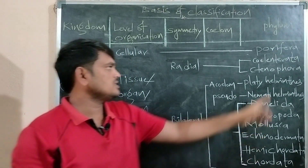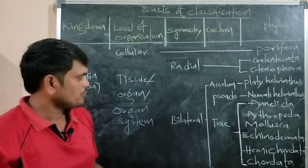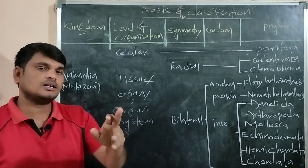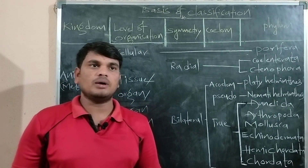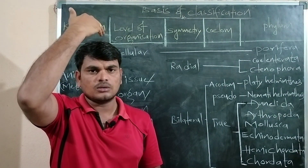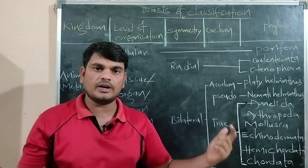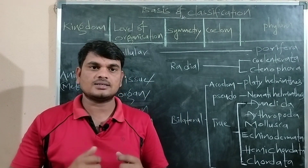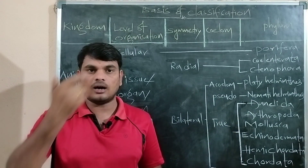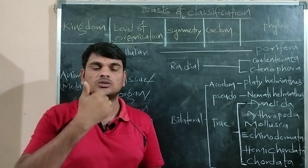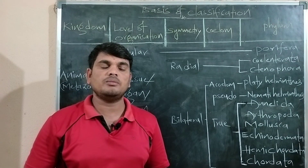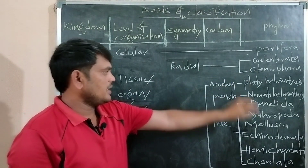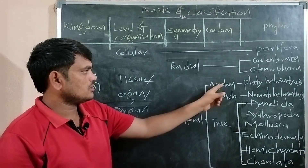Radial symmetry is exhibited by Coelenterata and Ctenophora. The remaining phyla, from Platyhelminthes to Chordata, exhibit bilateral symmetry. Bilateral symmetry means when you cut the body through a central axis you get two identical parts. Paired parts — eyes, ears, hands, legs — are distributed equally, while unpaired parts — nose, mouth, heart, liver — remain along the axis.